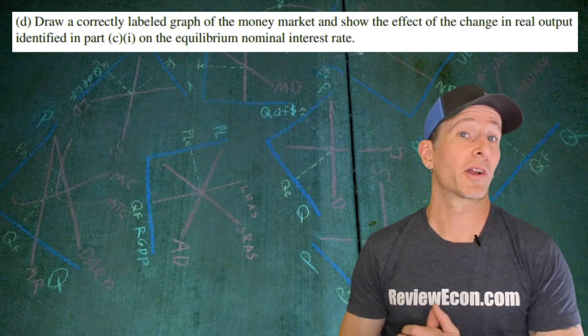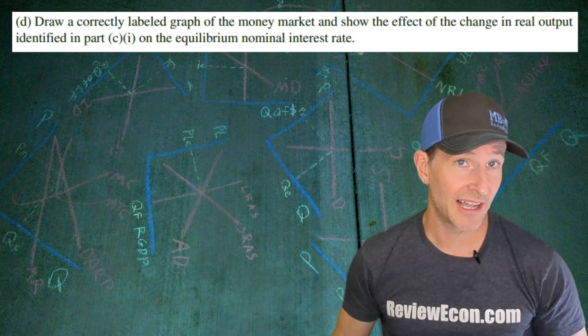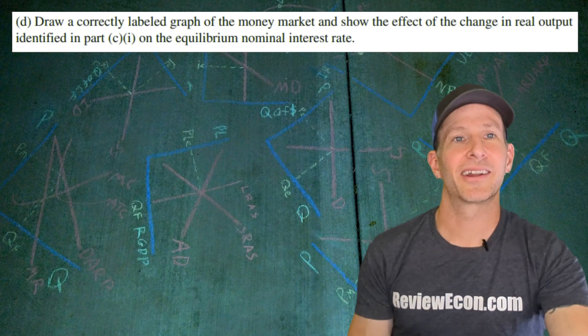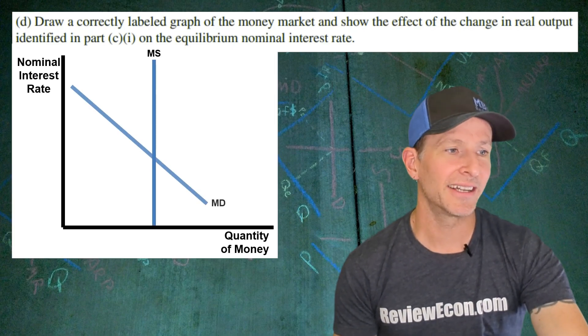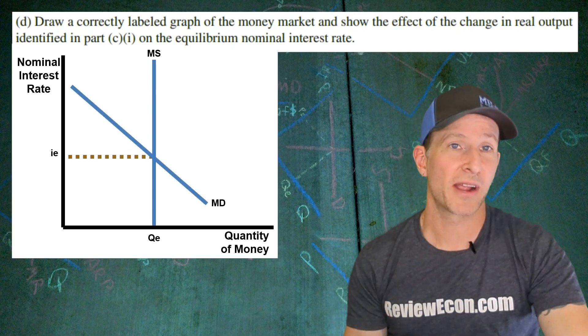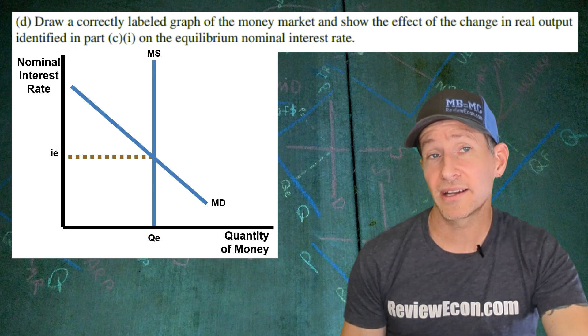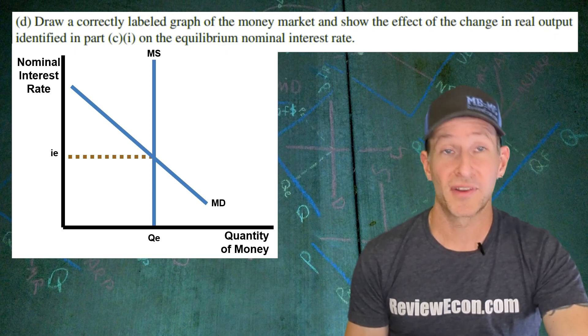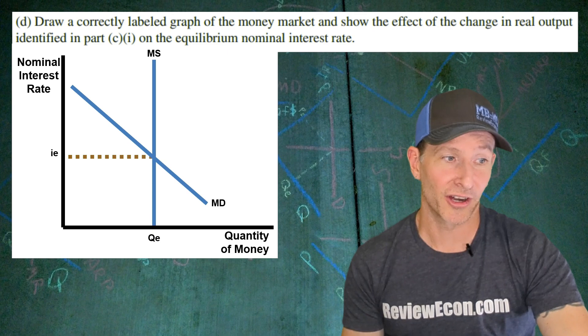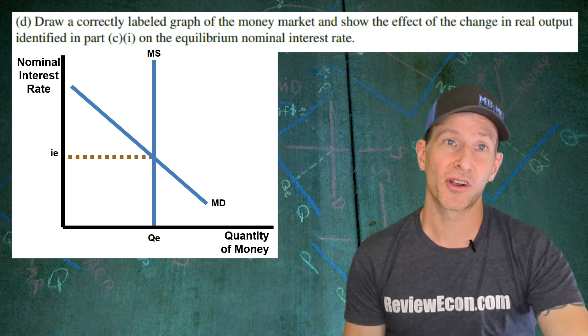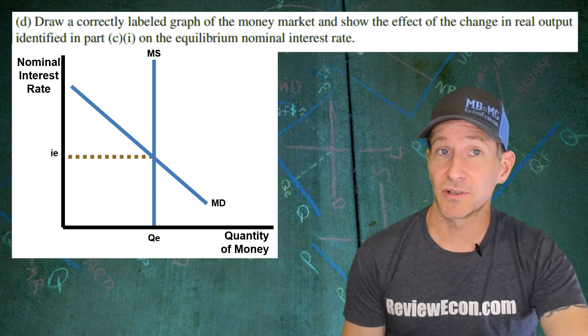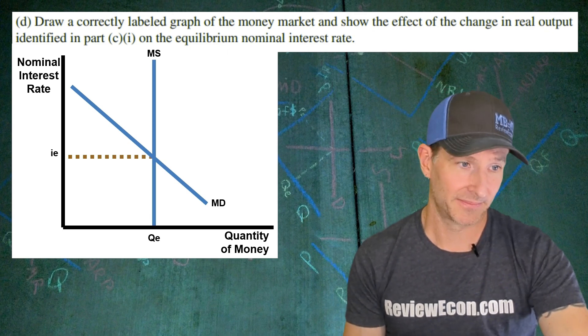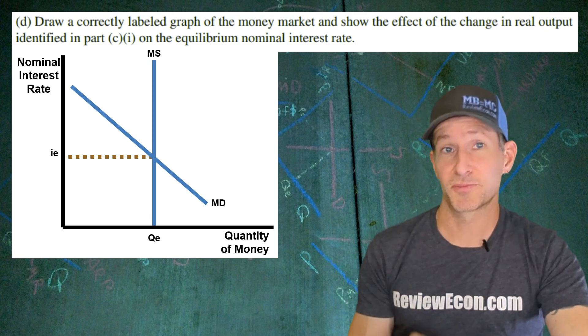For part D we're going to graph the money market and show the effect of the change in real output that we already identified in part CI. Let's get our axes for that money market graph. We have nominal interest rate on that y-axis, quantity of money on the x-axis, a downward sloping money demand curve, a vertical money supply curve, and at the intersection between the two curves we find our equilibrium nominal interest rate and our equilibrium quantity of money.